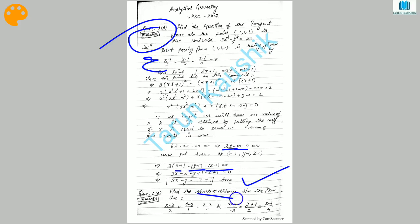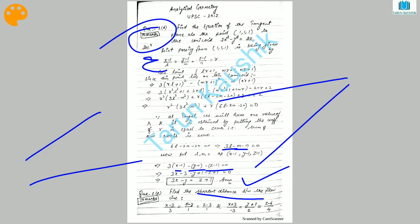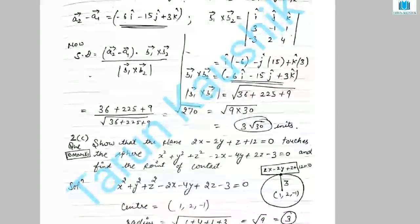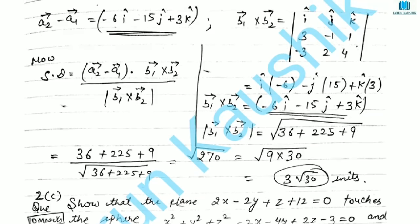The next question: find out the shortest distance between two skew lines. Two skew lines are lines which are not parallel. These two skew lines are given. Last year, the same type of question was asked but also required finding the point of intersection of the two skew lines. But in this year, only the distance between the two skew lines is asked. It's a very simple question.